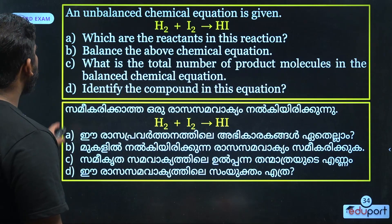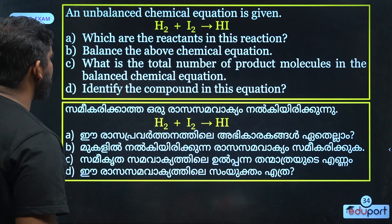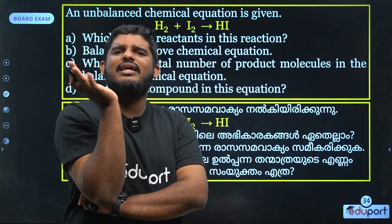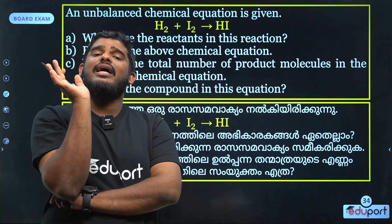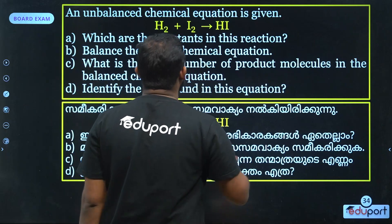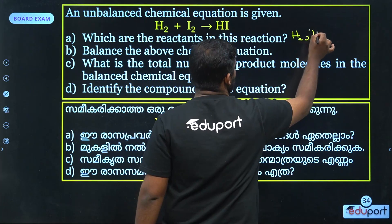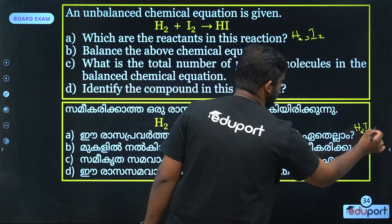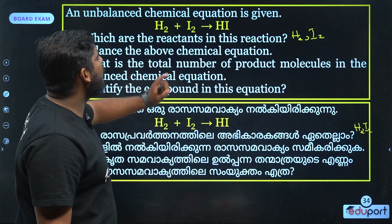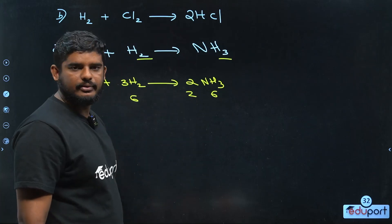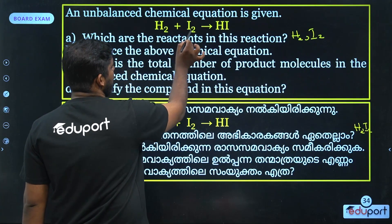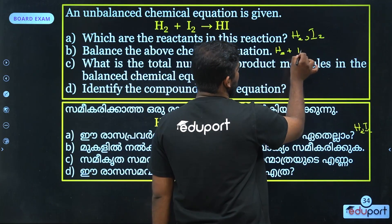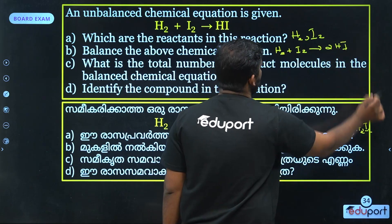The next thing: an unbalanced chemical equation is given. Which are the reactants? H2, I2. Then balance the above equation. We do this: H2 plus I2 gives 2HI. Simple.